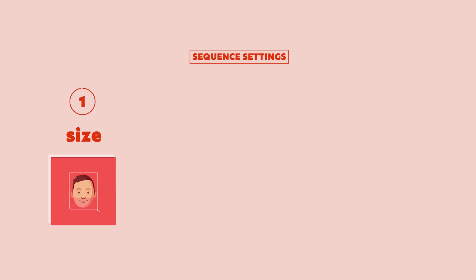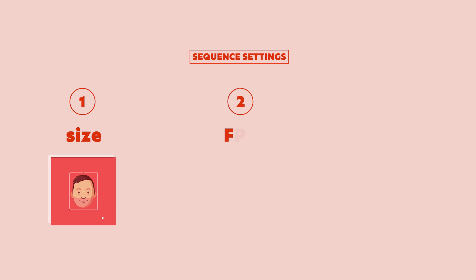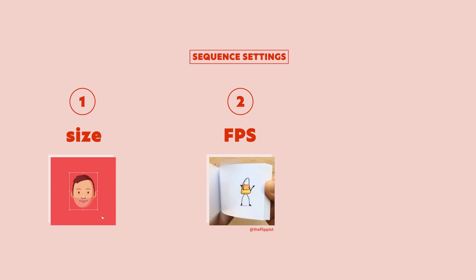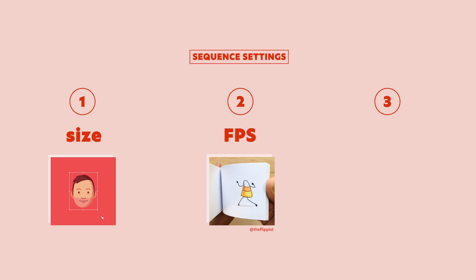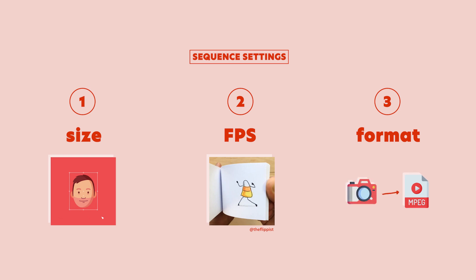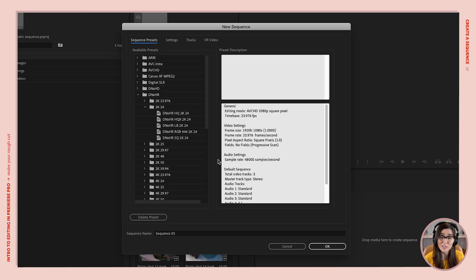Number one, it wants to know the size of your sequence — what are the dimensions of your video? Are you gonna do 1080, 4K, widescreen, square, vertical, etc.? Number two, it wants to know frames per second — how many little pictures do you want in your flip book every second? If you're confused about frame rates, I have a free lesson on that linked below. The third setting Premiere Pro is trying to figure out is what format are most of your files in — what kind of camera were you shooting with? When Premiere knows this, it's gonna know how to play back your files as smoothly as possible when you're editing.